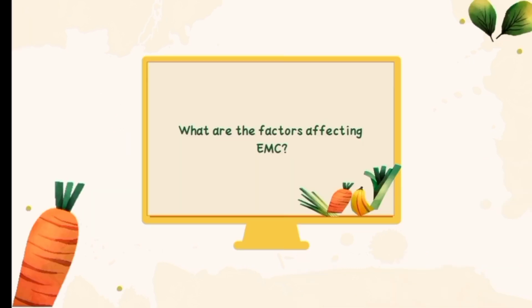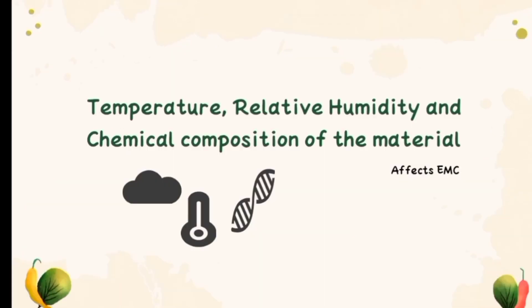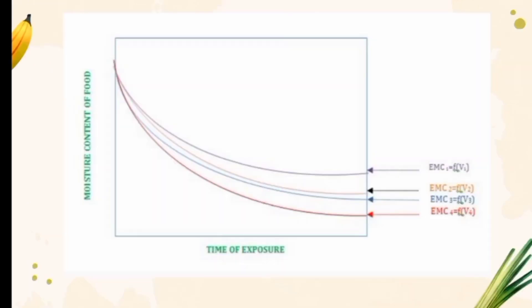What are the factors affecting EMC? Temperature, relative humidity, and chemical composition of the material affect EMC. If a food sample of the same initial moisture content and vapor pressure is exposed to air having different vapor pressures, it will come to equilibrium at different moisture content values.